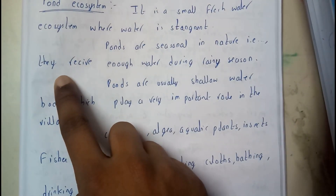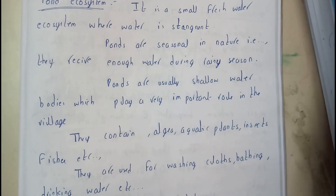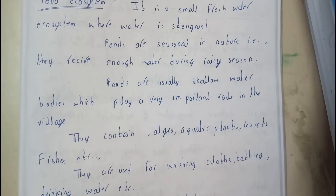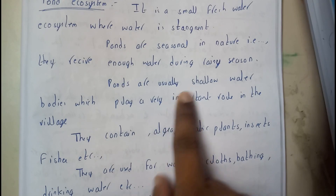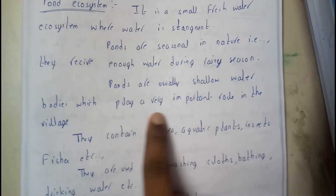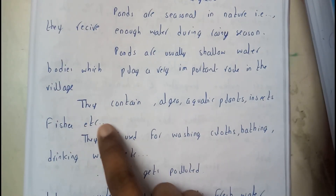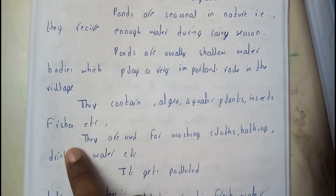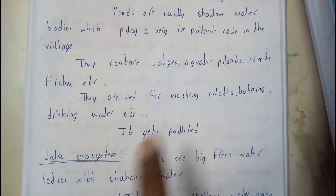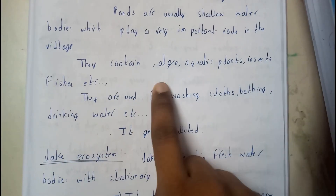Hence ponds are seasonal in nature — they fill up with water during the rainy season and will be empty on a sunny day or in summer. Ponds are usually shallow water bodies which play a very important role in villages, especially for agriculture. They contain aquatic plants, insects, and fishes.